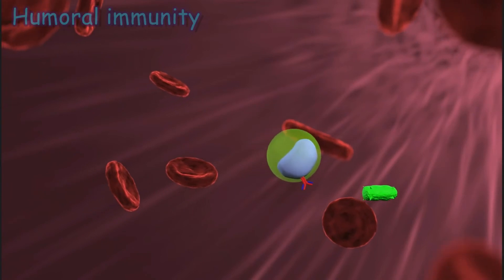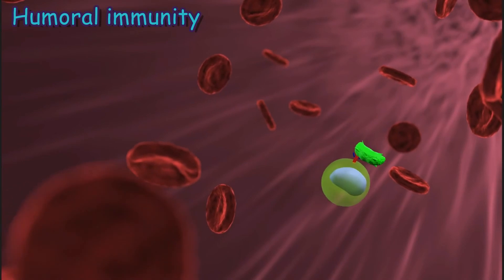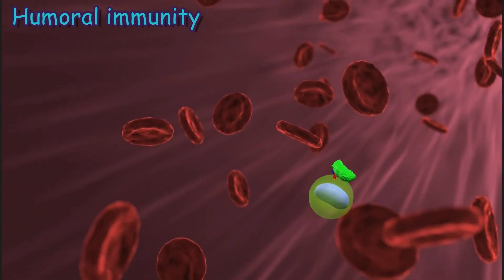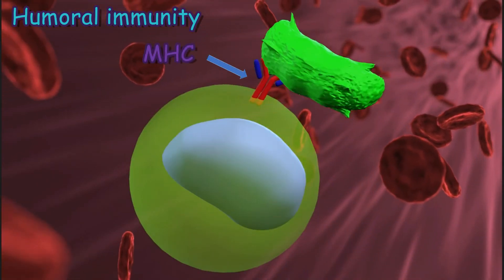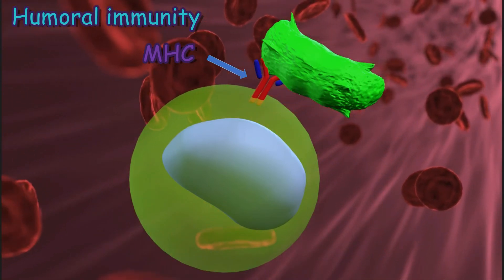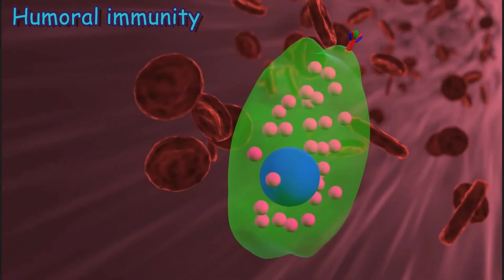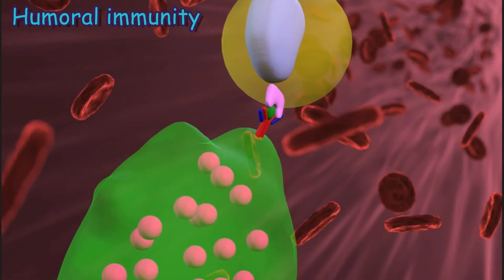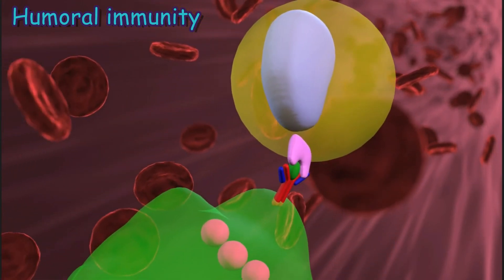When the microbe enters the circulation, the B cells interact with the antigen of this microbe by a protein called major histocompatibility complex, which is found on the surface of the B cell. Major histocompatibility complex is found on all body cells and helps white blood cells determine which cells belong to the body and which do not. At the same time, T helper cells interact with the pieces of antigen found on the major histocompatibility complex on the surface of macrophages by its CD4 antigen.